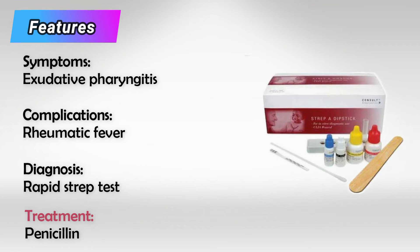So to recap: Scarlet Fever is caused by Strep A infection and it has a positive PYR test. The main characteristics are a rash on the body characterized as sandpaper rash, and a rash on the tongue characterized as strawberry rash. We can confirm the diagnosis with a rapid strep test, and we treat it with penicillin.